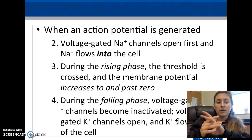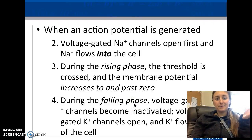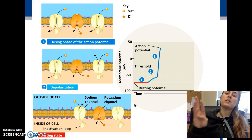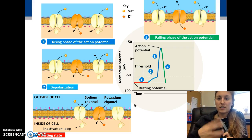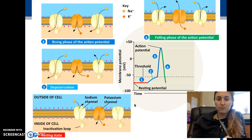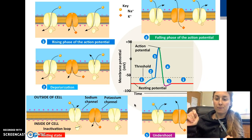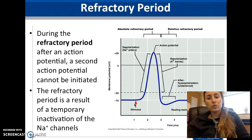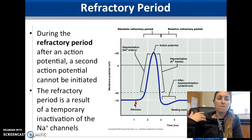During the rising phase, all ions rush in. During the falling phase, the opposite happens — ions are no longer let through. Once the peak is reached, the falling phase occurs and things start moving out. During the undershoot, so many positives leave the cell that it becomes excessively negative before balancing out again.